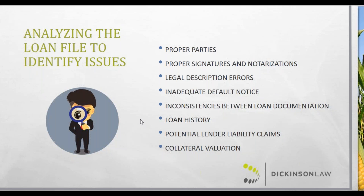Lender liability claims: examine any potential lender liability claims, which typically come in the form of oral promises to lend additional funds or a promise not to foreclose. It's important to sit down with any loan officers on the file and make sure you're aware of all oral or written promises made to the borrower. Collateral value concerns: analyze the value of the collateral in relation to the outstanding indebtedness. Whether the loan is upside down or has equity will have a direct bearing on whether you need to pursue guarantors, deficiency judgments, etc. Evaluate the financial position of the borrower and guarantor as well.